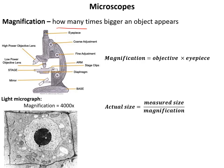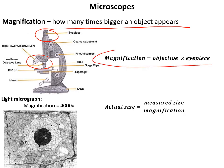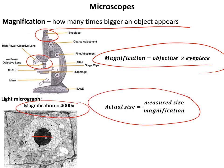Microscopes: the magnification of a microscope is how many times bigger an object appears. To work out the magnification, you multiply the magnification of the eyepiece lens by the magnification of the objective lens. To find the size of something from a micrograph, you measure its actual size in millimetres then divide by the magnification. You may need to multiply by a thousand to convert into micrometres.